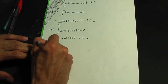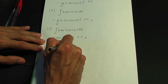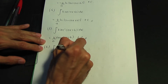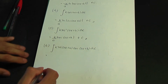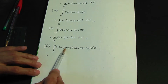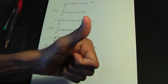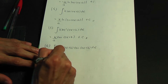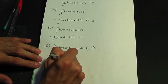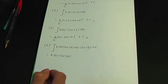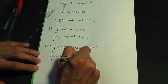Number six: if we integrate k sec(ax + b) tan(ax + b) with respect to x — k, a and b are constants, angles are of the form ax + b — when you integrate sec x tan x the standard result is sec x. So it's k sec(ax + b) divided by the derivative of ax + b, which is a, giving k over a, sec(ax + b), plus c.